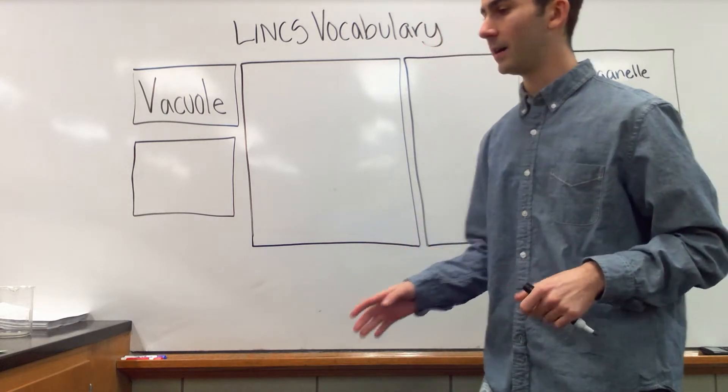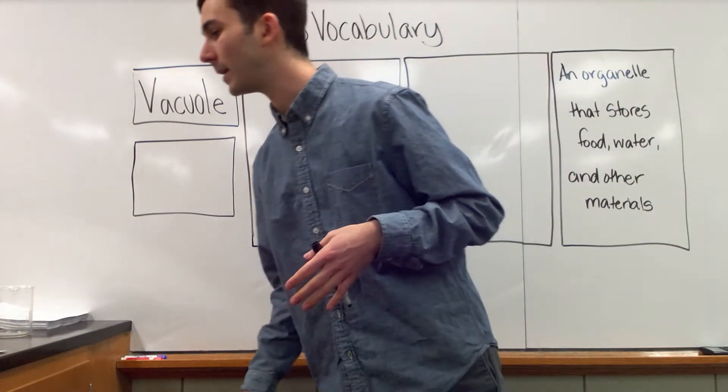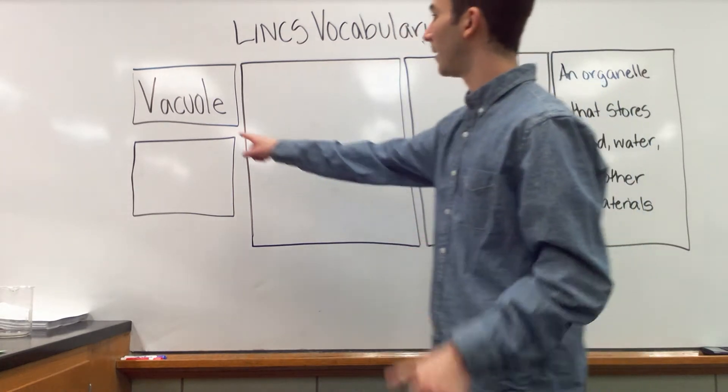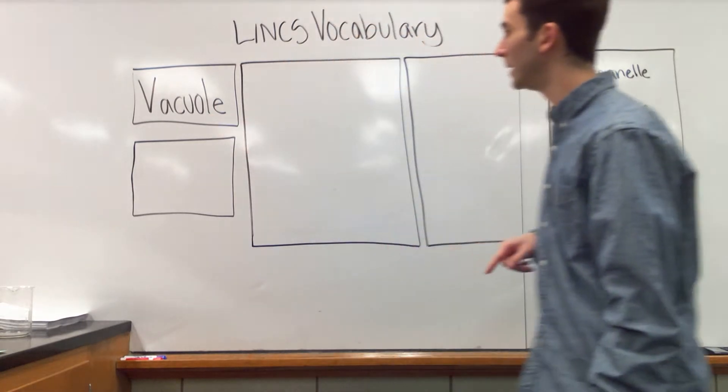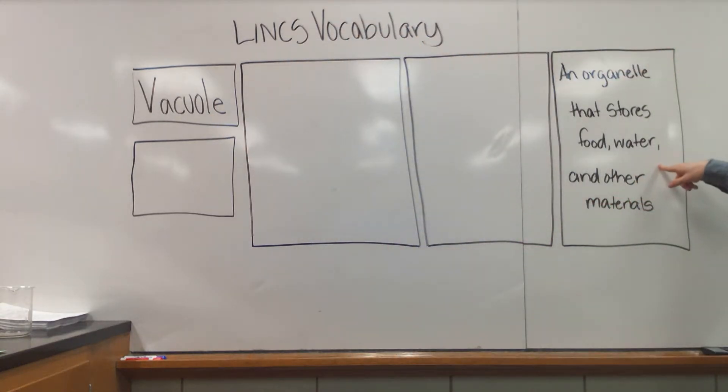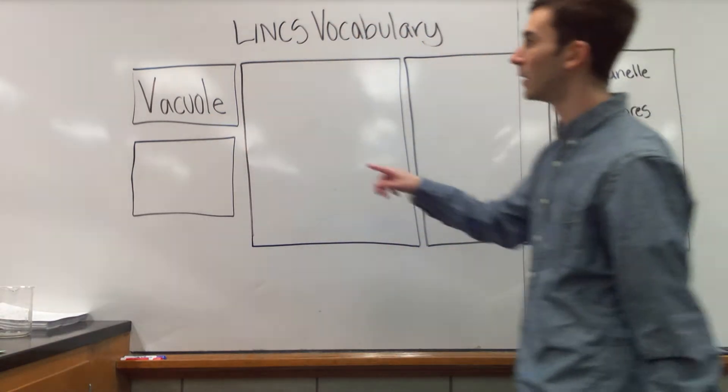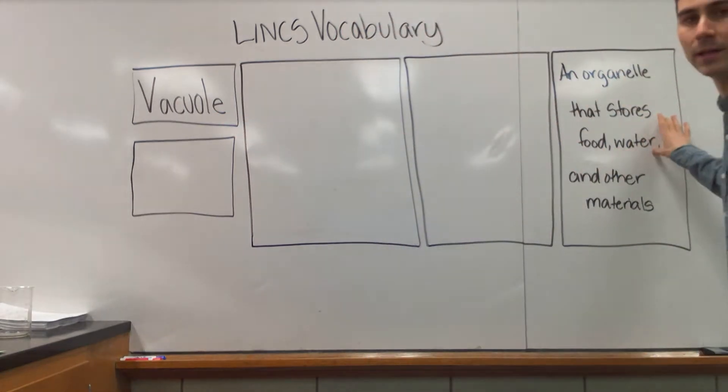The first thing we need to do with our linking vocab strategy is take our vocab word, write it in that term box, and take our definition and write it in the definition box so that we know, okay, this is our word, this is the definition that we need to know.